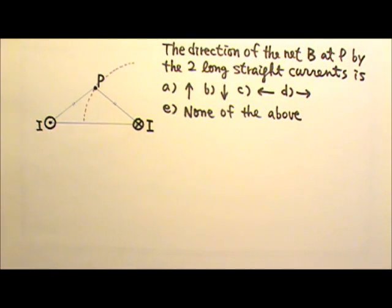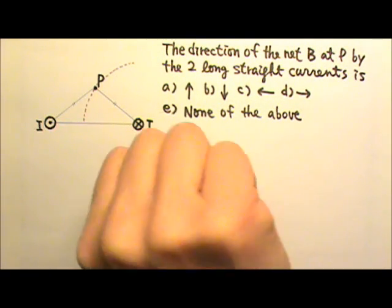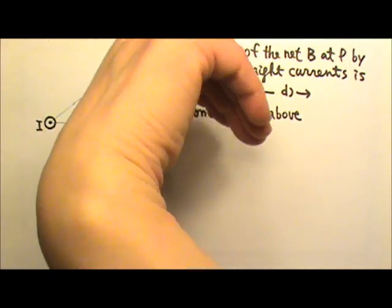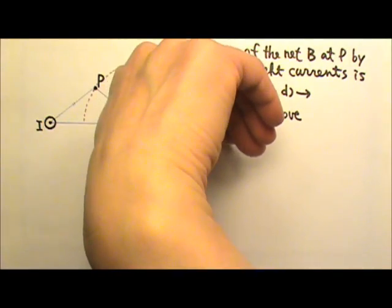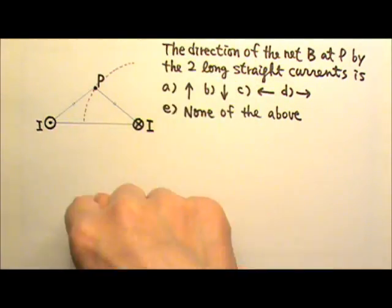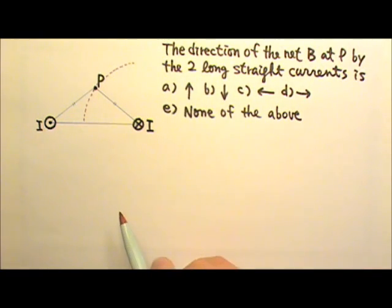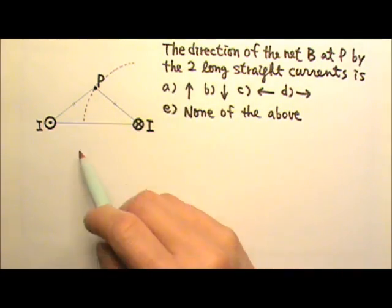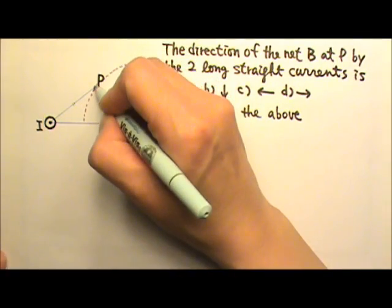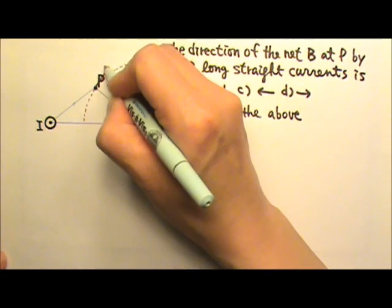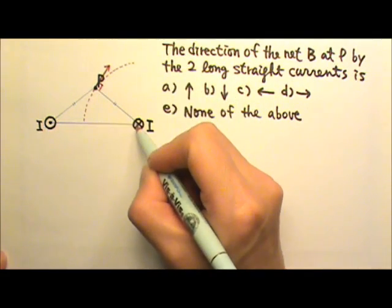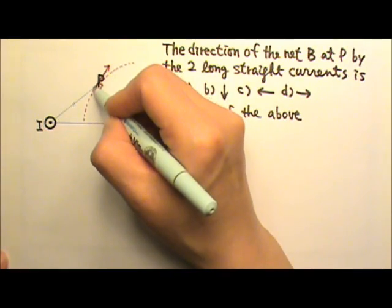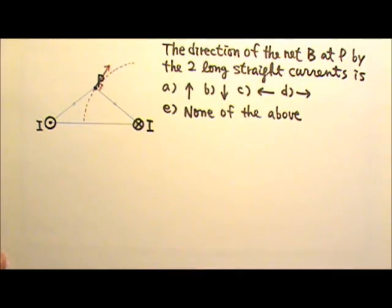If I use my thumb to follow the current, you can see that the magnetic field lines form circles that are clockwise. So the direction of the magnetic field at point P must be tangent to the circle in a clockwise direction, perpendicular to this radial direction, tangent to the circle in the clockwise direction.